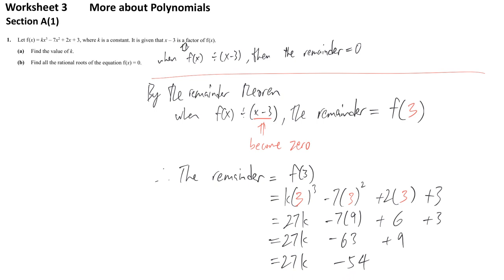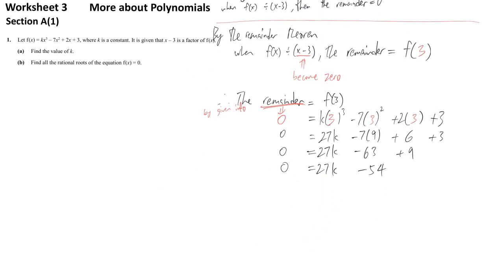On the other hand, the question tells us the remainder directly. By the given information, the remainder is zero, because x minus 3 is a factor. Setting 27k minus 54 equal to zero gives us an equation with k as the only unknown. Solving: 27k equals 54, so k equals 2. We have solved part A.